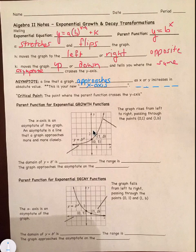Critical point. This is the point where the parent function crosses the y-axis. So it's our y-intercept.